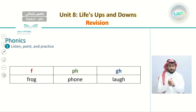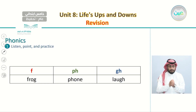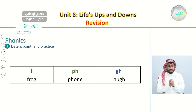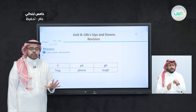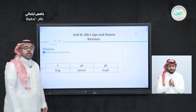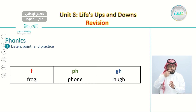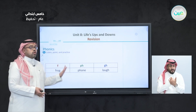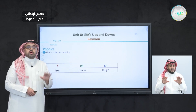The first word is frog — say with me, frog. The second one is fawn. And the third one is laugh. So here we have three different words but they share the same sound. The sound of F is in frog, the sound of PH is in phone, and the sound of GH is in laugh. This is a very interesting thing to learn — different letters but the same sound.